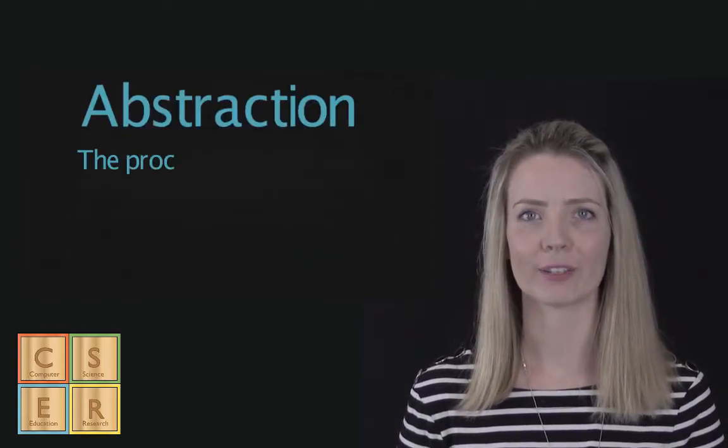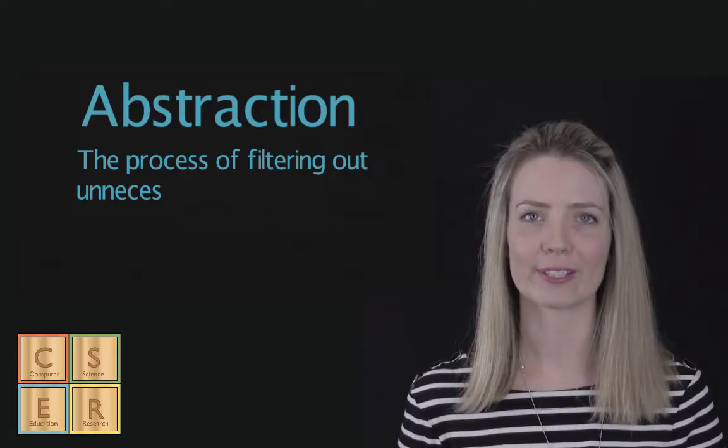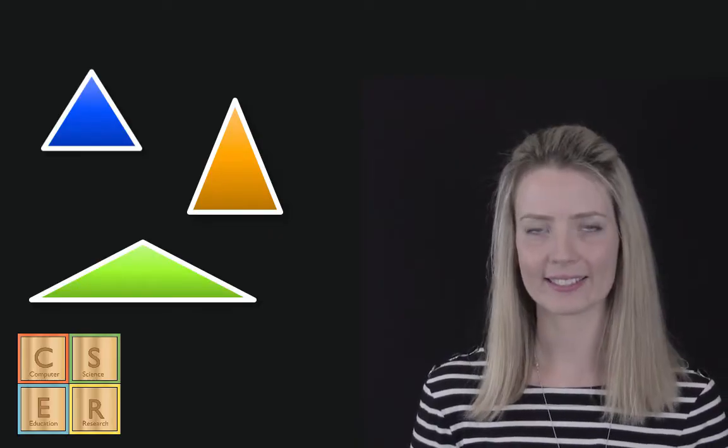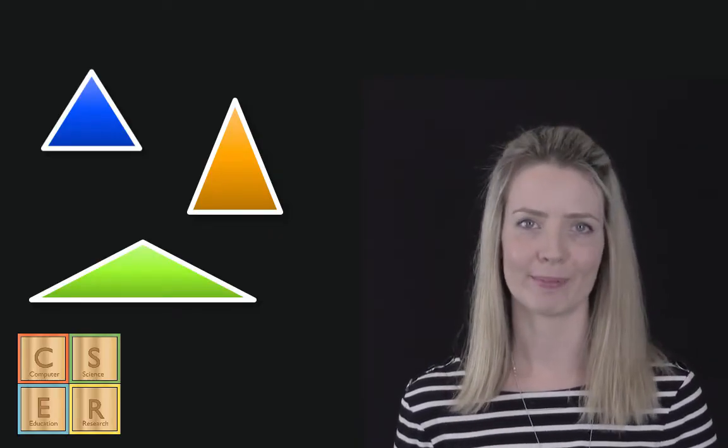Abstraction is the process of reducing the complexity of an idea or a concept by filtering out unnecessary information. For example, these shapes are all different colours and sizes, but we can abstractly describe them as triangles.